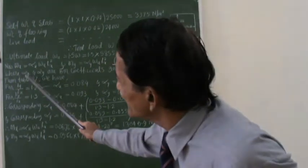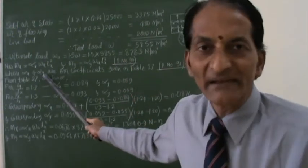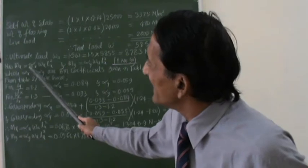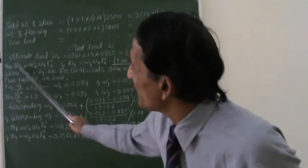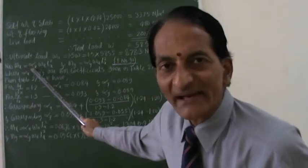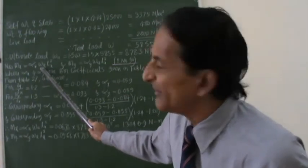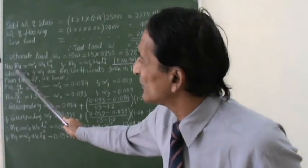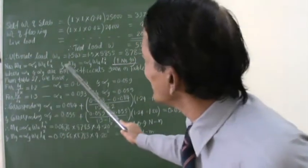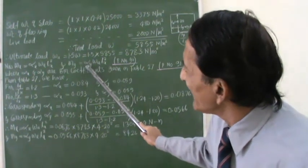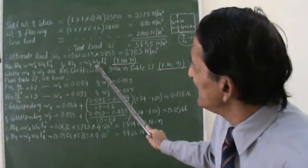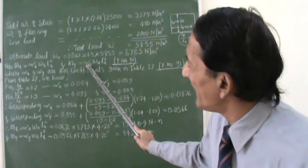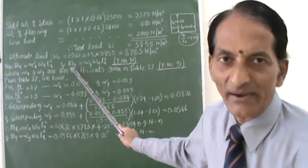So now, by using this alpha x and alpha y, the bending moment coefficients, I can easily calculate this bending moment. See now. In this equation, if I know alpha x, you know wu, you know Lx. If I know alpha x, I can easily calculate Mx. Similarly, in this equation, if I know alpha y, you know wu, you know Lx. So if you know this alpha y, you can easily calculate My.